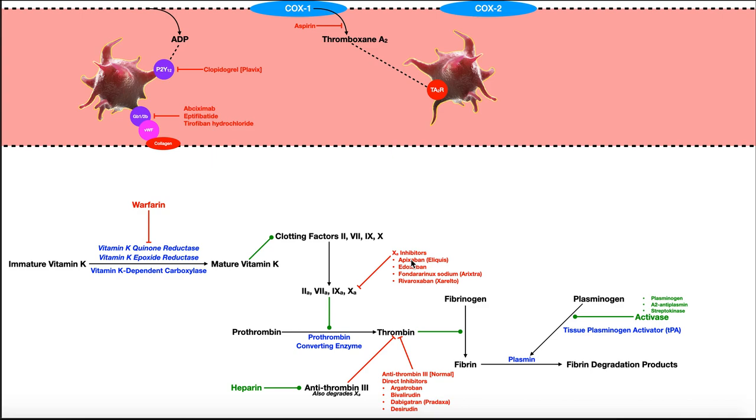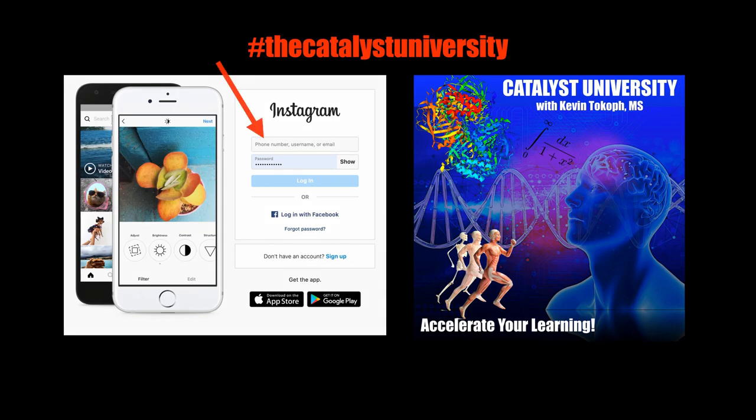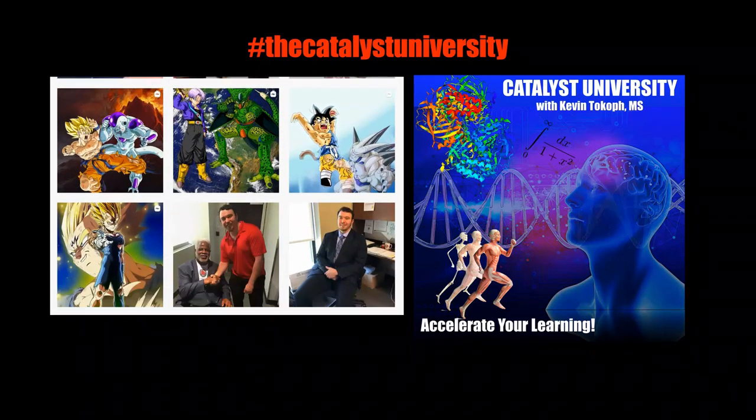So hopefully this made sense to you and gave you some good information on how we can affect the clotting cascade and blood clots in order to reduce risk of stroke and things like that by thinning the blood. Thanks for tuning in. Please like, subscribe, and check out my Instagram for cool science and not science stuff.